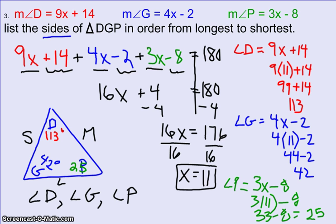So to list it from longest to shortest, my longest was GP. My middle segment was segment DP. And my shortest was DG. So that would be your correct answer. Not listing the angles, listing the side lengths.